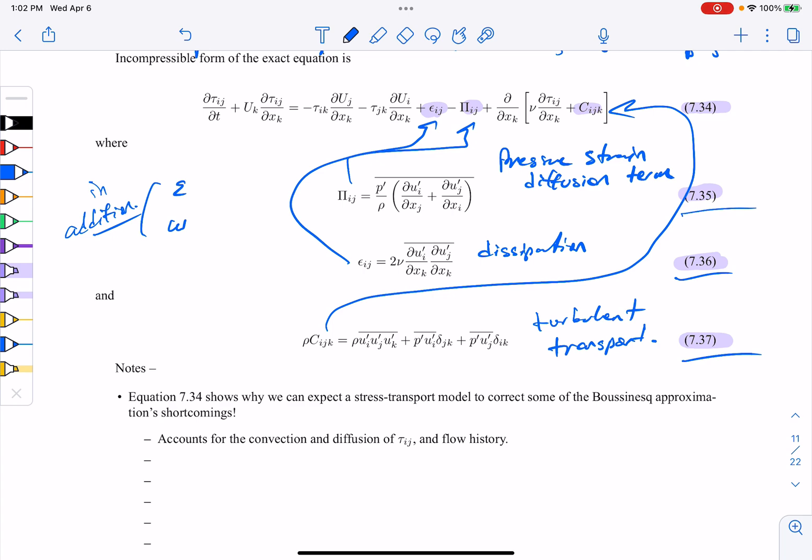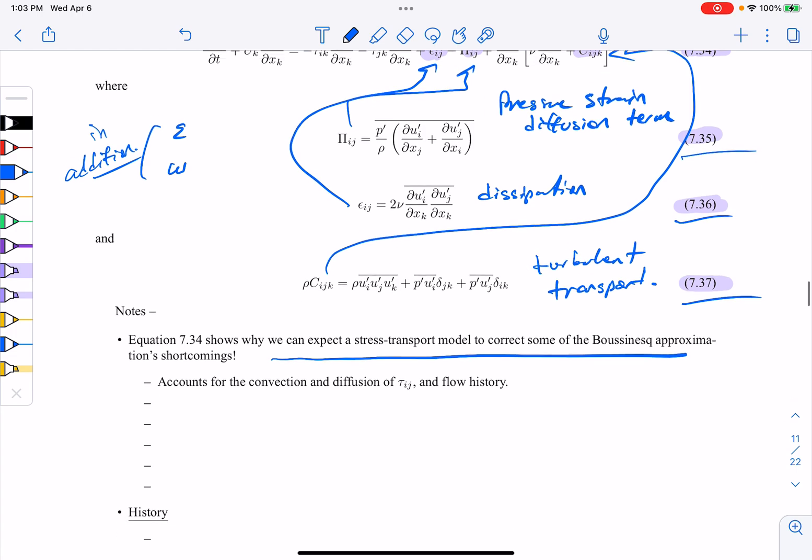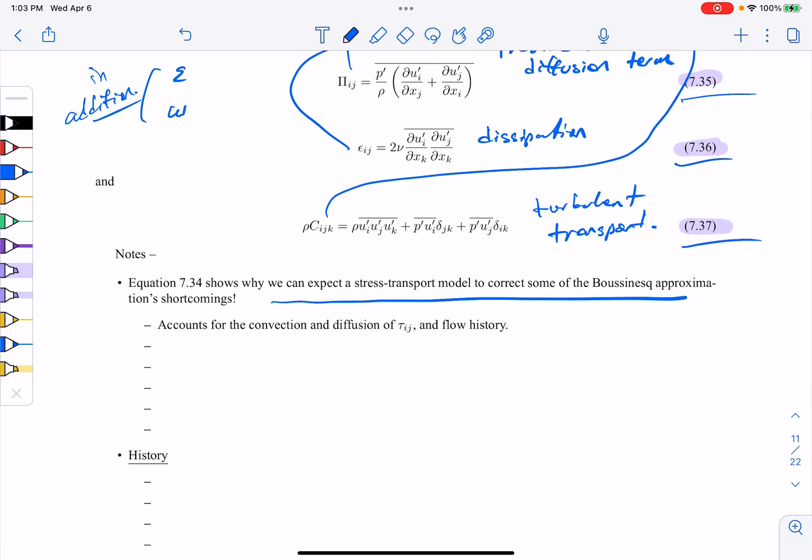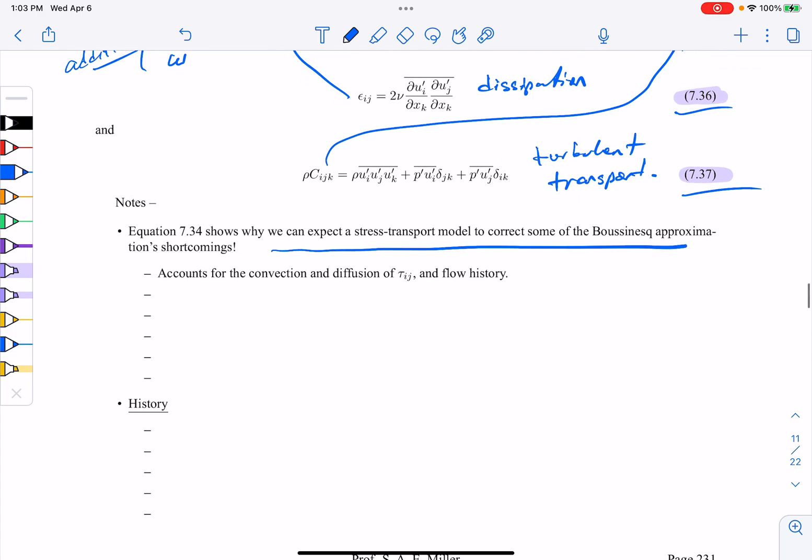So we do expect, for the reasons I just listed in this class, that this type of model would automatically correct for some of the things like curvature or fast changes in mean strain, secondary motions, shock separation, boundary layer separation. So we need to look and say, okay, well, this equation does account for some of the convection and diffusion terms and flow history.